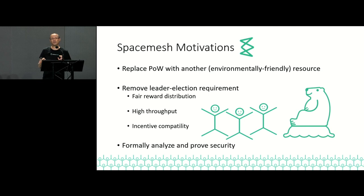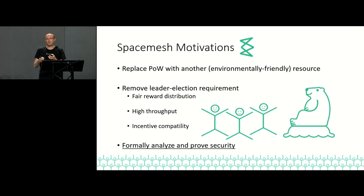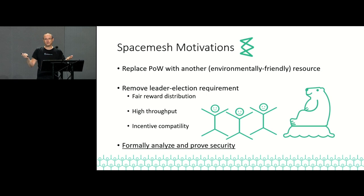Our motivation in designing Space Mesh was to have something we can formally analyze and prove secure. In the space of cryptography and security, unlike regular algorithms, we can't check things by experimenting because we can never experiment on what the attack is going to be. The only way to get confidence that our systems are secure is to have some formal proof. This doesn't formally prove nothing can attack them, but it can reduce the attack surface to some well-studied assumptions — if you can attack this, you can attack lots of other things that lots of people have studied.